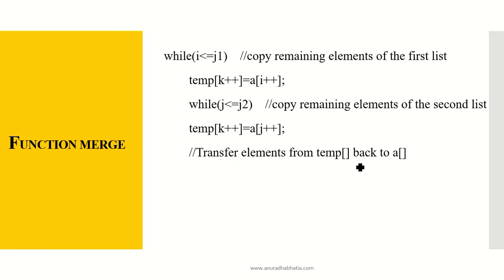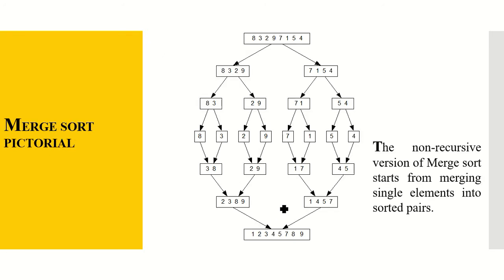Transfer elements from temp back to A, that is from my temporary array, I need to copy the elements to my main array. So here is the copying procedure which will work. i is equal to i1, j is equal to 0, i less than or equal to j2, i++, j++, a[i] is equal to temp[j]. So this is a simple copying procedure and it ends over here. This is how my function merge will be working.